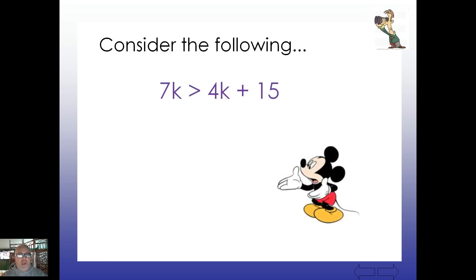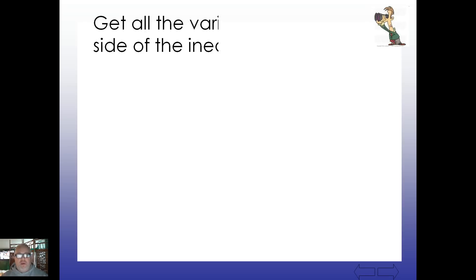So consider the following: 7k is greater than 4k plus 15. Well, let's go ahead and do what we know how to do with variables on both sides. Let's get rid of the smaller version. There's variables on both sides here, so let's get rid of the smaller version of this. How about we get rid of the 4k? So we're going to subtract 4k from both sides of our inequality here.